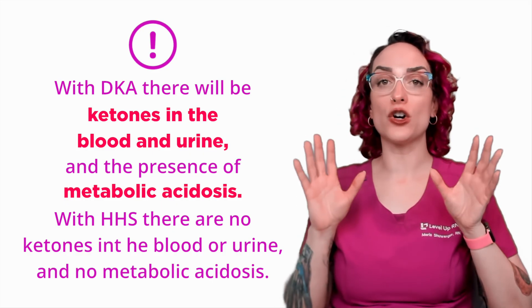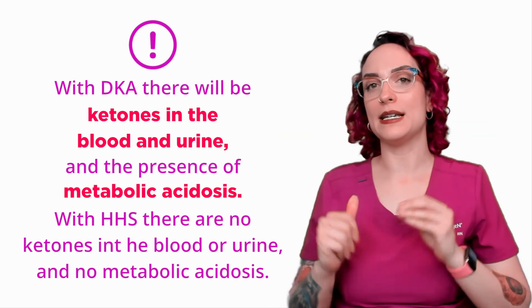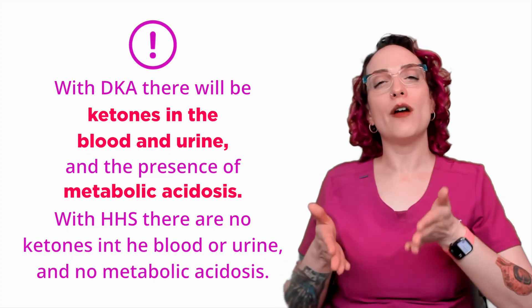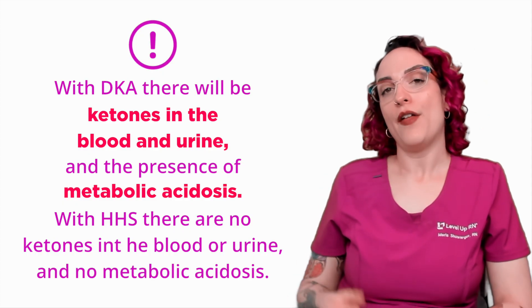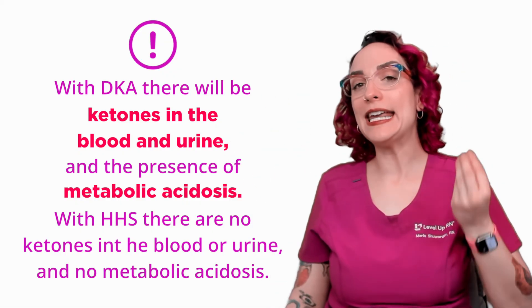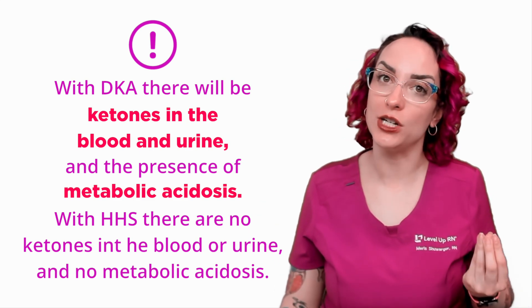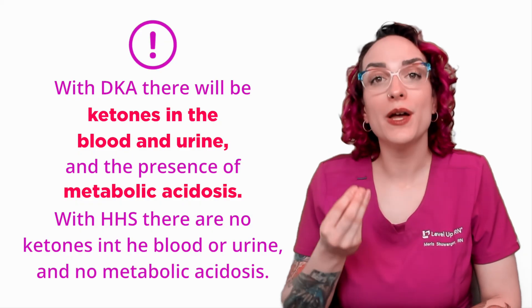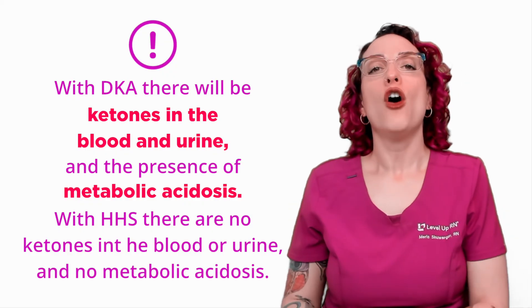Why is this? With type 2 diabetes, there is relative insulin resistance; however, the patient likely still makes some amount of insulin that the body is able to utilize. That amount of insulin keeps the type 2 diabetic from going into ketoacidosis — there is no liberating of ketone bodies in an attempt to find an energy source. We have enough insulin to provide some energy so we are not ending up in a state of ketoacidosis.